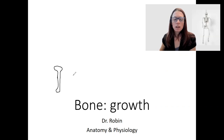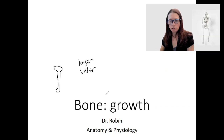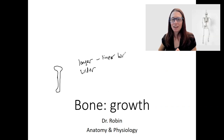What does that bone need to do? It needs to get longer and it needs to get wider. So there are two separate processes that do those two things. One is going to be called linear bone growth, and the other one, the widening, is appositional growth.